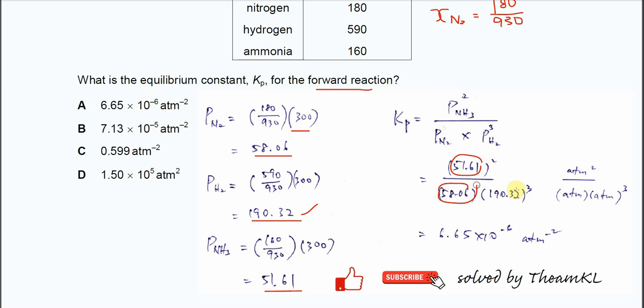Substitute all these values into the Kp expression. You get 6.65 times 10 to the power of negative 6. The unit is atm to the power of negative 2, because it's atm squared over atm to the power 4.